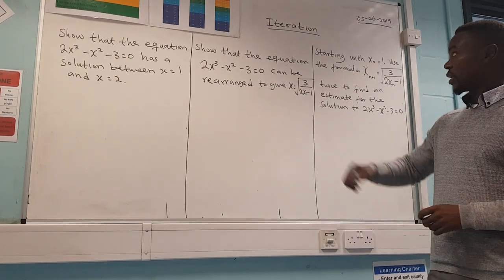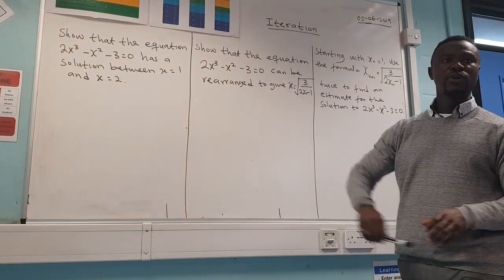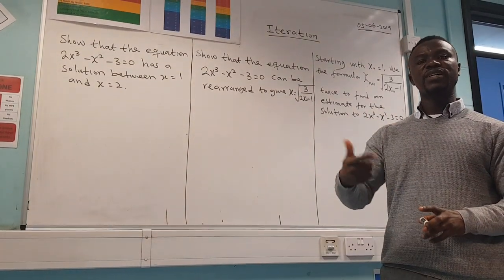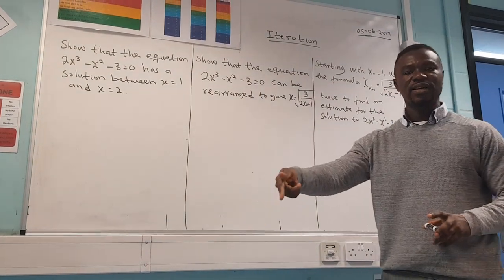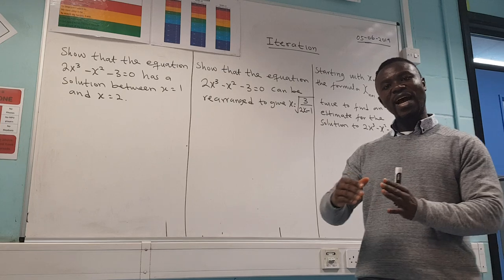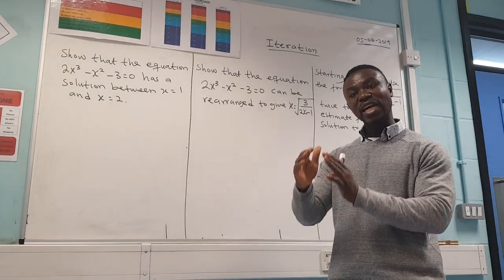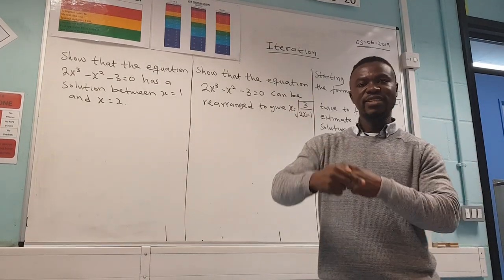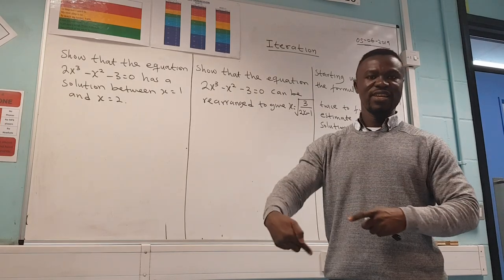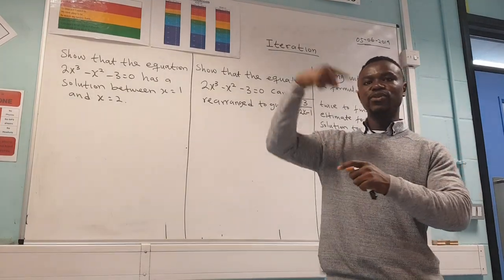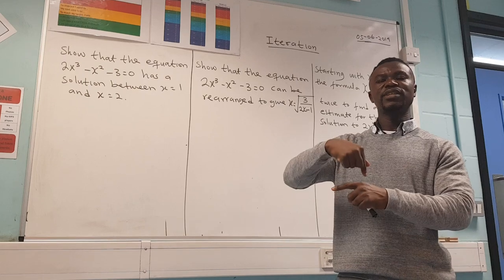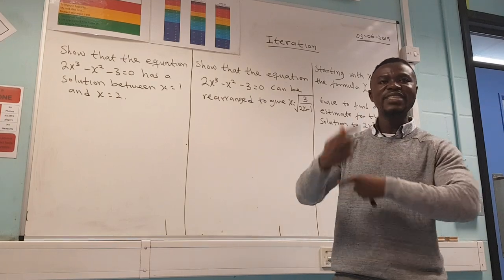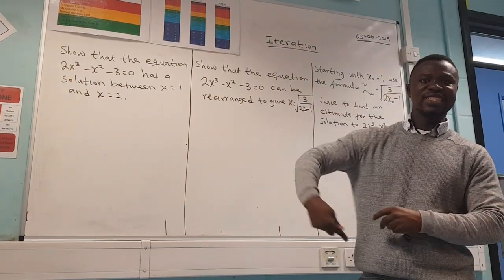Today we're looking at what we call iteration. Iteration in maths just means the repetition of a process using your previous answer, and the purpose of that is to get as close and as accurate to the approximation of the answer we are looking for. Iteration means keep repeating, but as you repeat you use your previous answer — you put it back into the formula, get a new answer, and that becomes your previous answer.